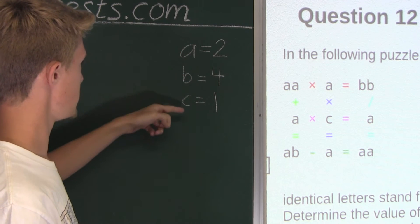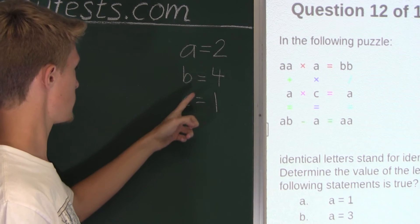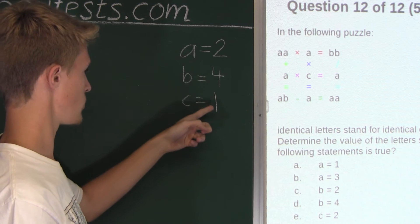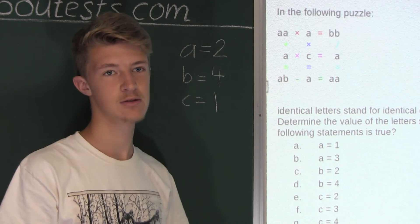So we have the values for A, B, and C. A is equal to 2, B is equal to 4, and C is equal to 1. Now let's look at the options and see which of the following statements is true.